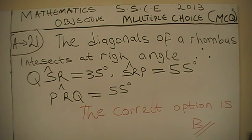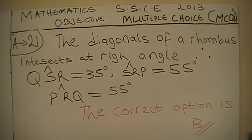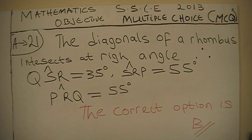...at right angles. Therefore, angle QSR equals 35 degrees, and angle SRP equals 55 degrees.